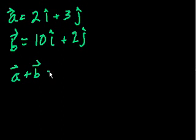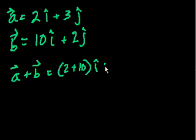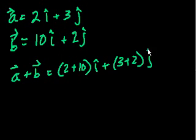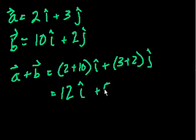So vector a plus vector b, that's just 2 plus 10 times i plus 3 plus 2 times j. And that's equal to 12i plus 5j.